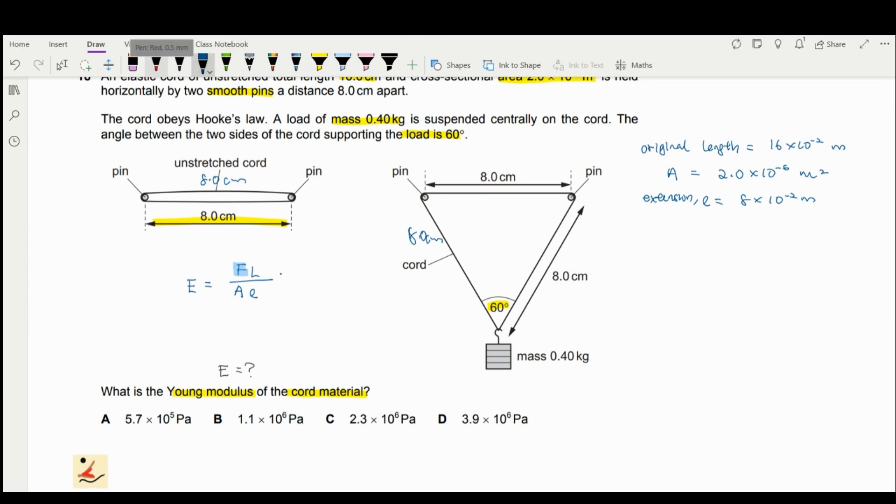So if you look at the diagram here, you have the weight of 0.4 times 9.81 here. This is your weight. And you have tension here.